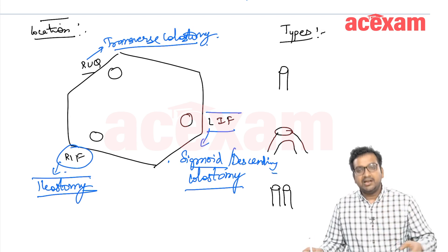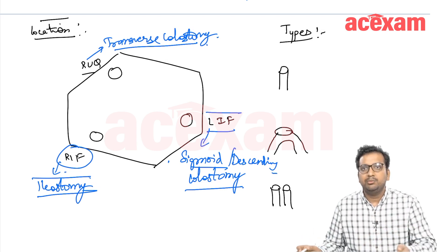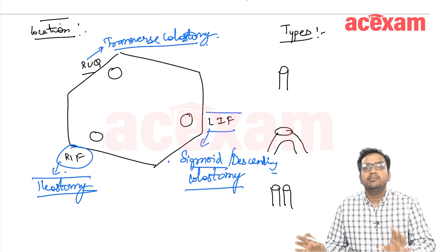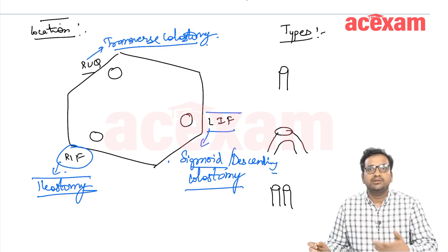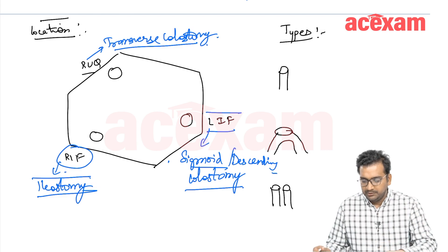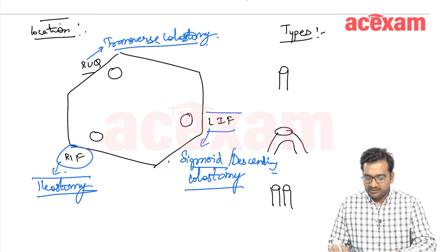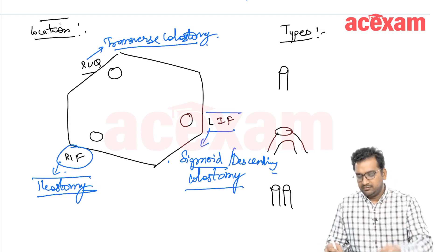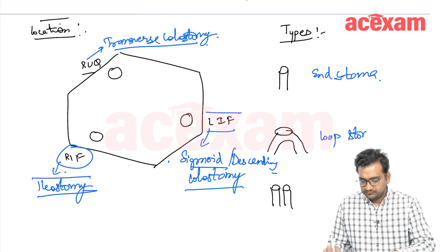On clinical examination, if a patient has a stoma in the right iliac fossa, even without removing the bag we can get a general idea that this will be an ileostomy. After removing the bag, we can identify it based on the mucosal appearance. There are three types of stoma: end stoma, loop stoma, and double barrel stoma.